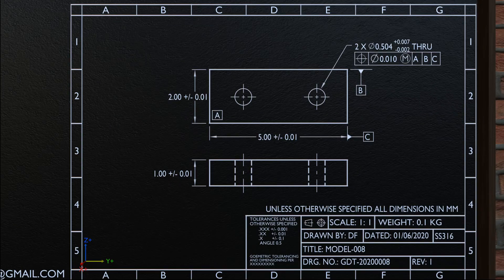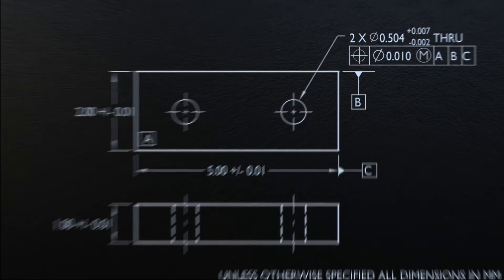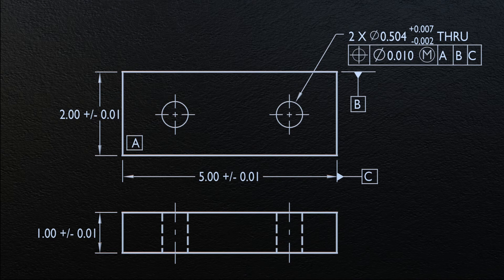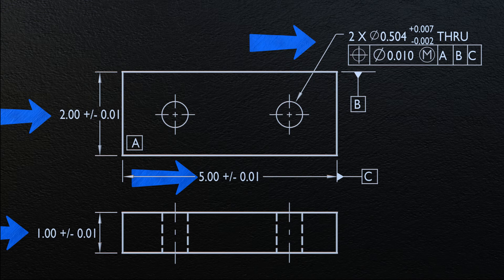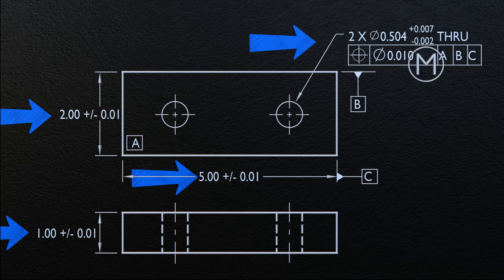To start with, let us consider this example where a manufacturer is provided with this engineering drawing. The object has length, breadth, and height, and there are two holes with a specified diameter and tolerances. The holes should lie within positional tolerance with respect to defined datums, and a circled M symbol denotes the Maximum Material Condition. In this video, we are going to discuss how to interpret and apply the Maximum Material Condition.